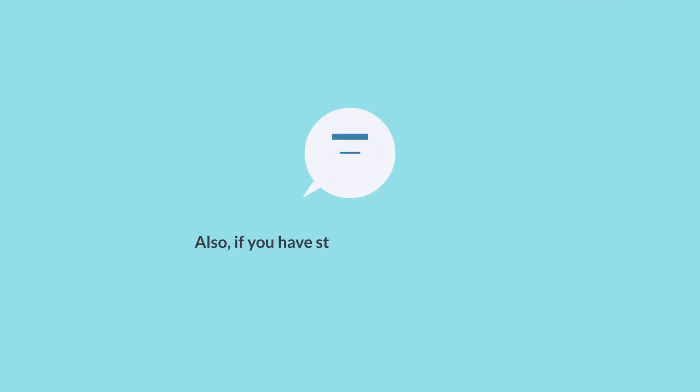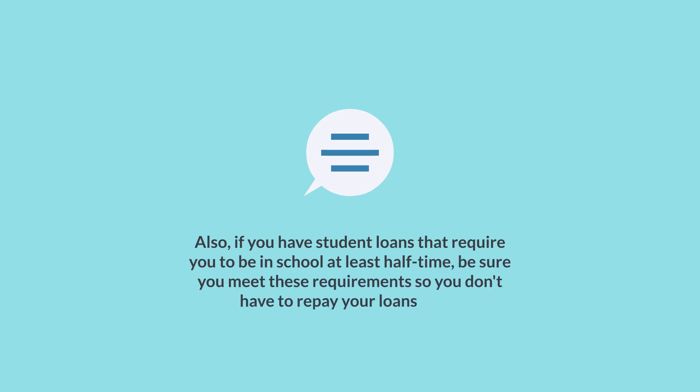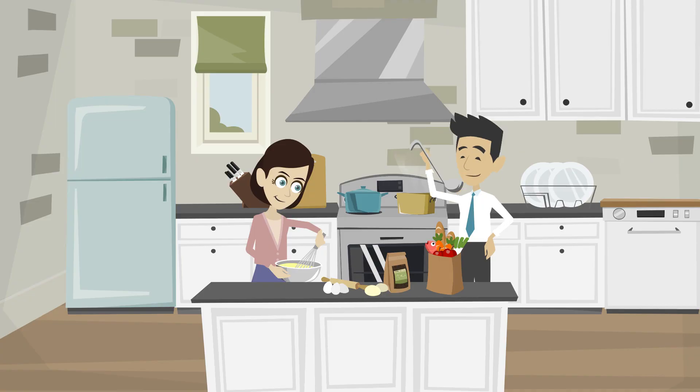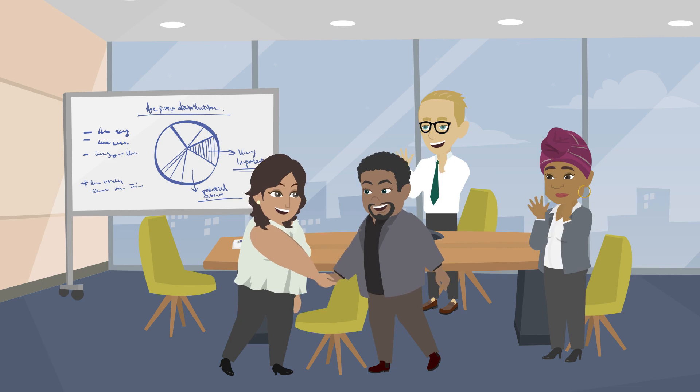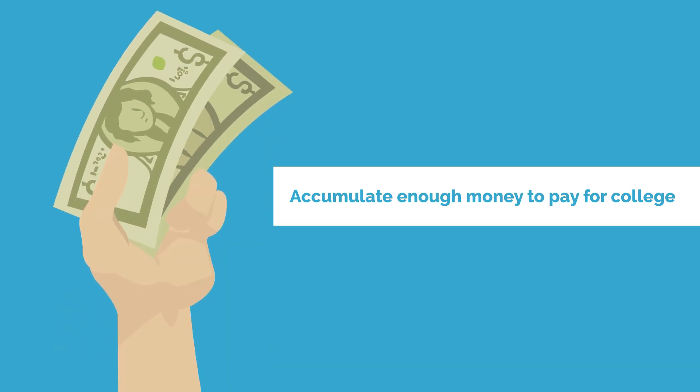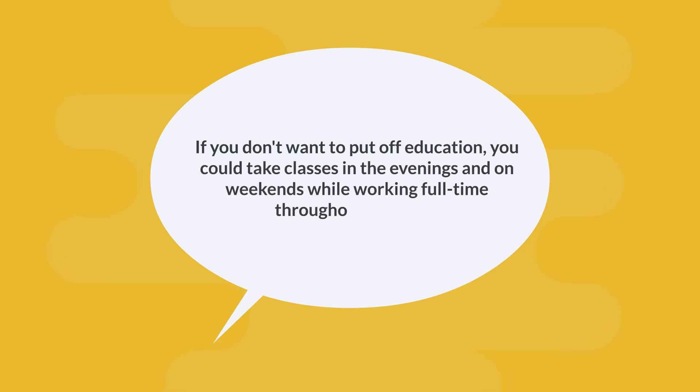Also, if you have student loans that require you to be in school at least half-time, be sure you meet these requirements so you don't have to repay your loans early. Another alternative is to take a year or two off after high school to work full-time and accumulate enough money to pay for college. If you don't want to put off education, you can take classes in the evenings and on weekends while working full-time throughout the week.